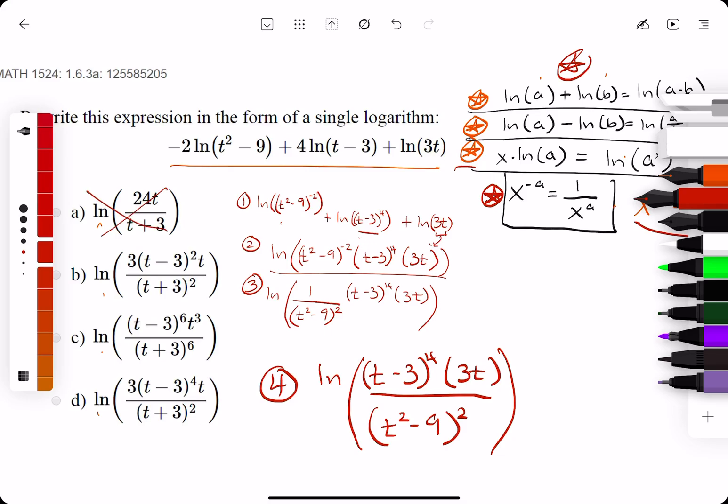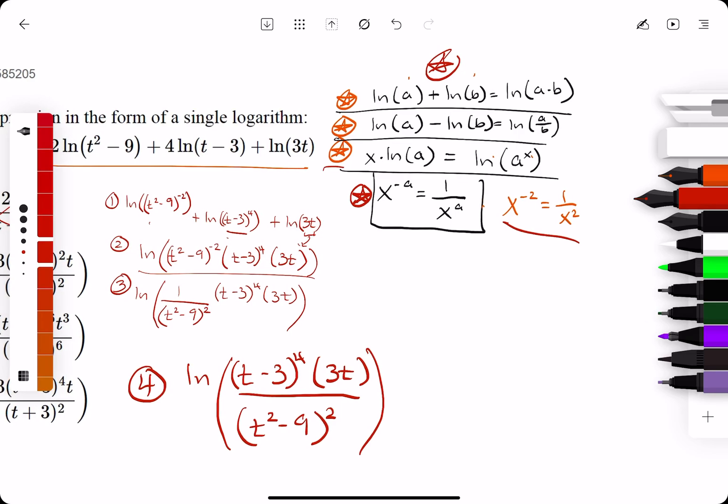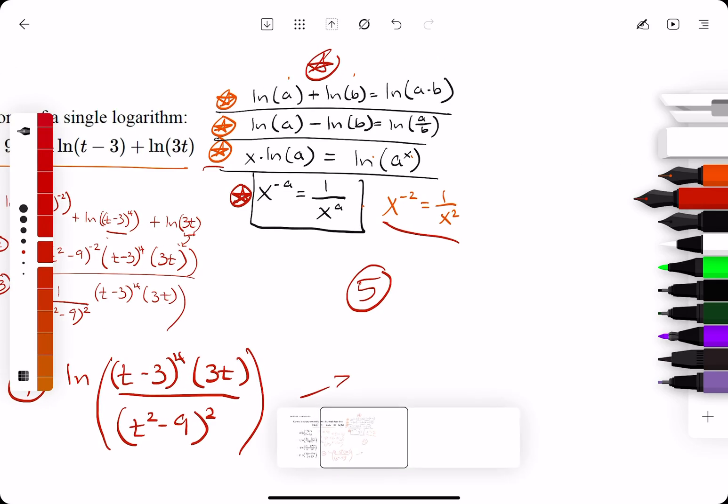We can probably eliminate some options right off the bat. A, not looking very good. B, looks questionable. Let's move on to C. D, yeah, they all look a little suspicious. It is hard to tell yet. So, we are going to keep simplifying. So, we look at the bottom and we notice that t squared minus 9 can be factored. So, we say, oh boy, let's do some factoring.